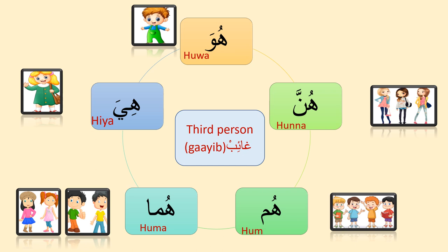Next we are going to learn third person pronouns. In Arabic, third person pronoun is called Dhamaa'ir al-Gha'ib. Gha'ib means absent — third person means talking about someone in their absence. For example, if I am talking about my friend who is in Egypt, he is not present, so he is third person. Third person pronouns: Hua — he, singular male; Hia — she, singular female; Huma — both, for two males or two females; Hum — they, male plural; Hunna — they, female plural.